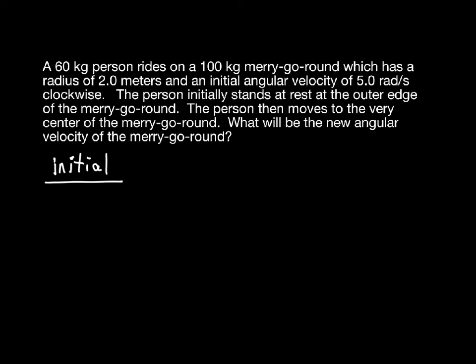Now let's look at a problem. We have a 60-kilogram person riding on a 100-kilogram merry-go-round, which has a radius of two meters and an initial angular velocity of five radians per second clockwise. The person is at rest relative to the merry-go-round — going around in circles relative to the ground — and they're at the very outer edge of the merry-go-round, standing right on the lip.